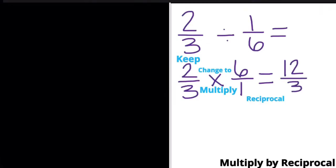After we've done that we multiply the numerator: two times six is twelve, and multiply the denominator: three times one is three. That's an improper fraction so we need to go ahead and do the division twelve divided by three. In this case we get four wholes with nothing remaining.